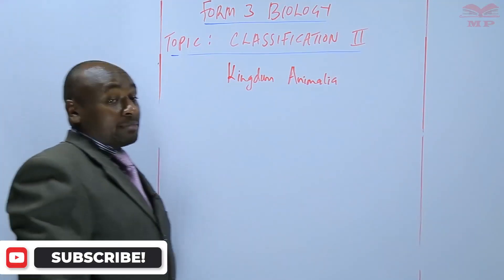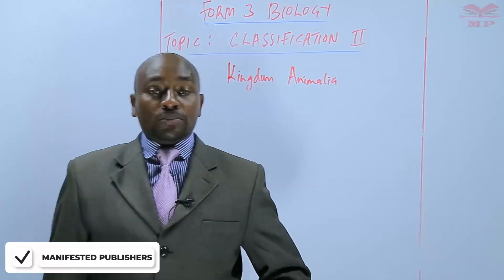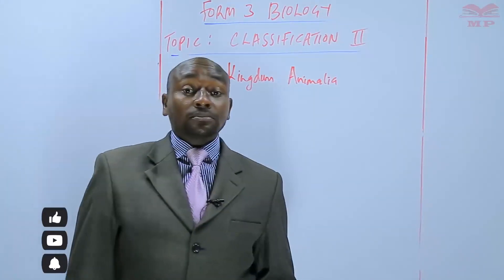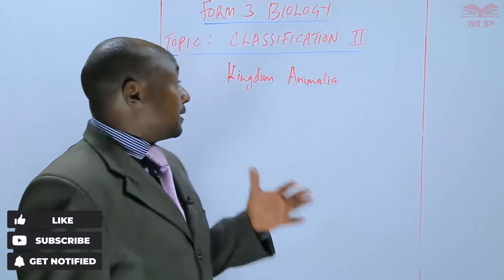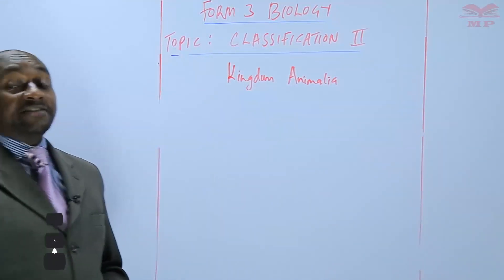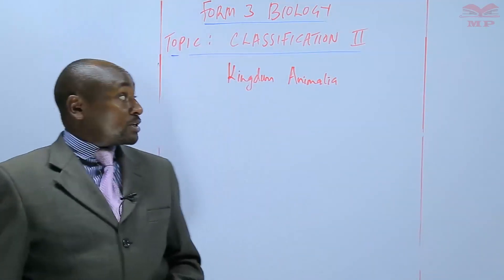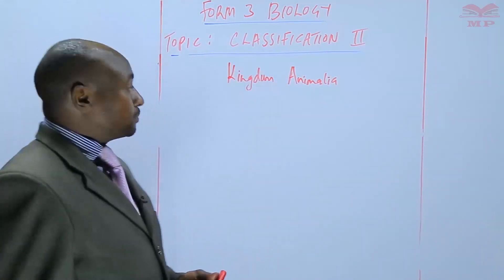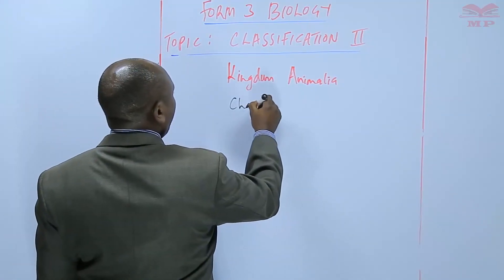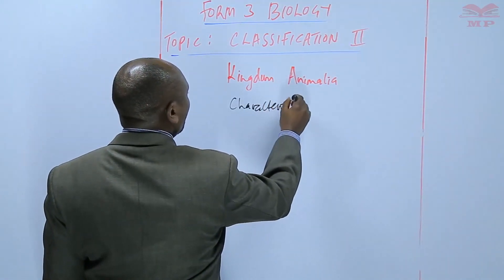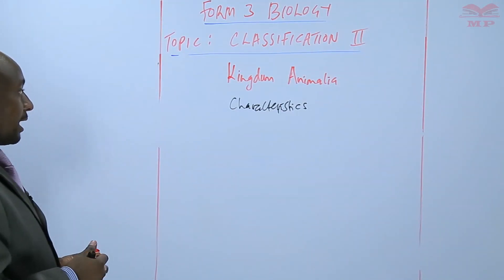Kingdom Animalia is one of the most advanced kingdoms of taxonomy, and in this kingdom we have the different types of animals. We are going to study the characteristics of Kingdom Animalia first.